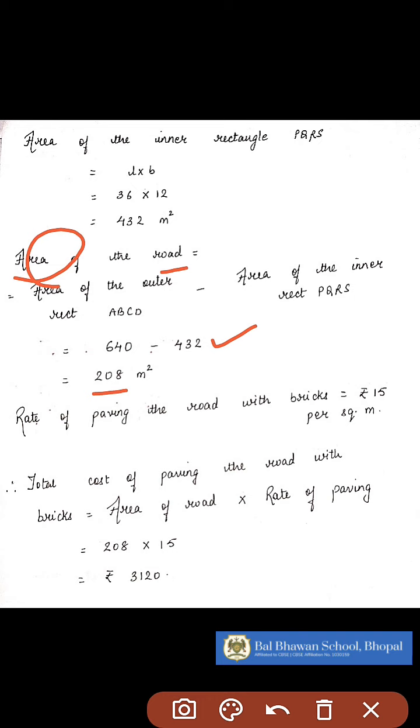Now we have the area which we need to pave with bricks, and the rate of paving that road with bricks is Rs. 15 per square meter. So the total cost of paving the road will become area into the rate. That is 208 into 15, which will give you Rs. 3120.